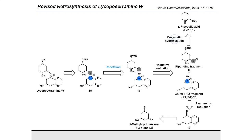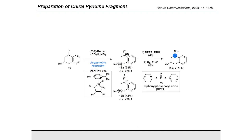Translating this skeletal editing idea to our total synthesis, the desired C–C coupling product would be obtained from the nitrogen deletion of a corresponding secondary amine, which would be accessed from the aldehyde of the piperidine fragment and the chiral amine of the tetrahydroquinoline fragment through reductive amination. To obtain the chiral amine, the pyridyl ketone was subjected to asymmetric reduction using the Noyori–Ikariya catalyst in the presence of formic acid and triethylamine. This reduction provided two separable diastereomers, and the structure of one diastereomer was confirmed by X-ray crystallography.